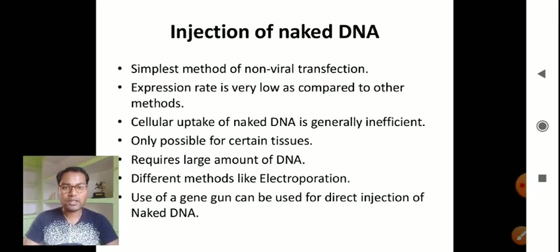Injection of naked DNA is the simplest method of non-viral transfection. Expression rate is very low compared to other methods. Cellular uptake of naked DNA is generally inefficient, only possible for certain human tissues. It requires large amounts of DNA. Different methods like electroporation and use of a gene gun can be used for direct injection of naked DNA.